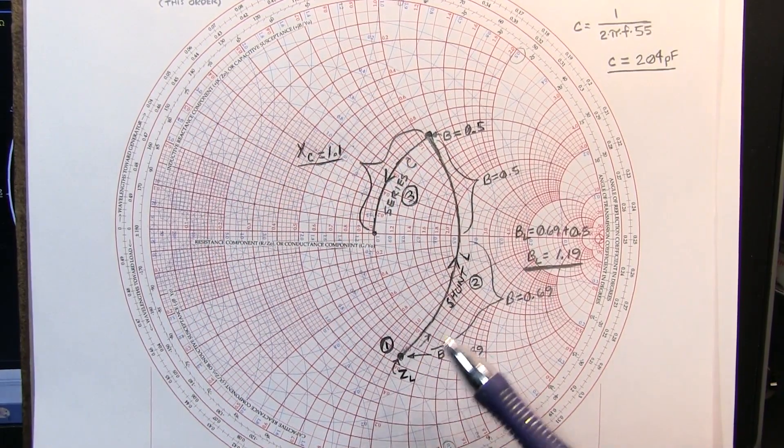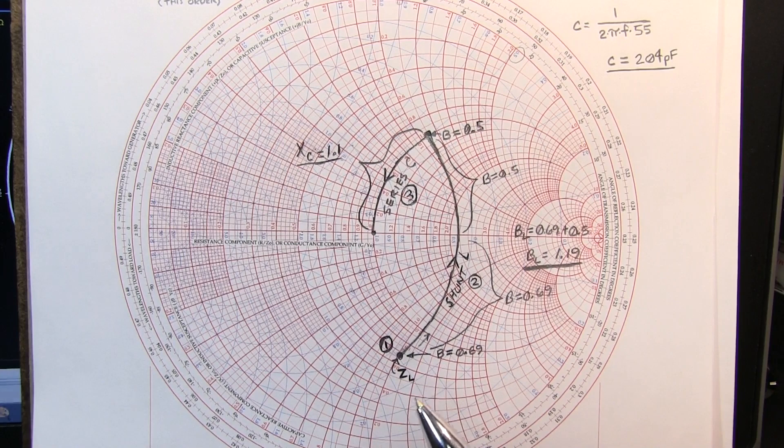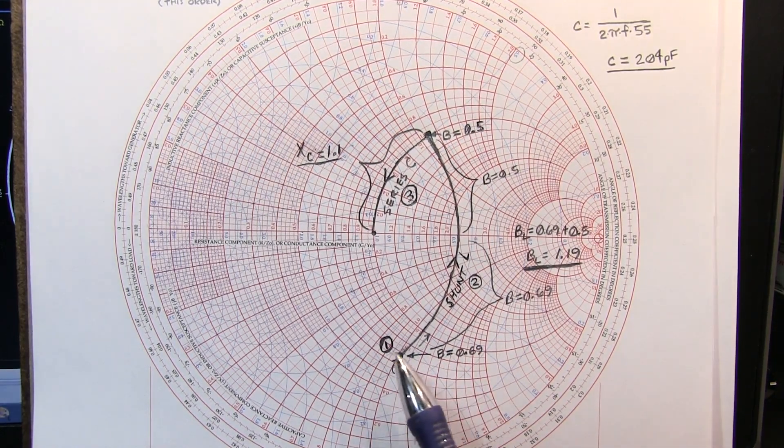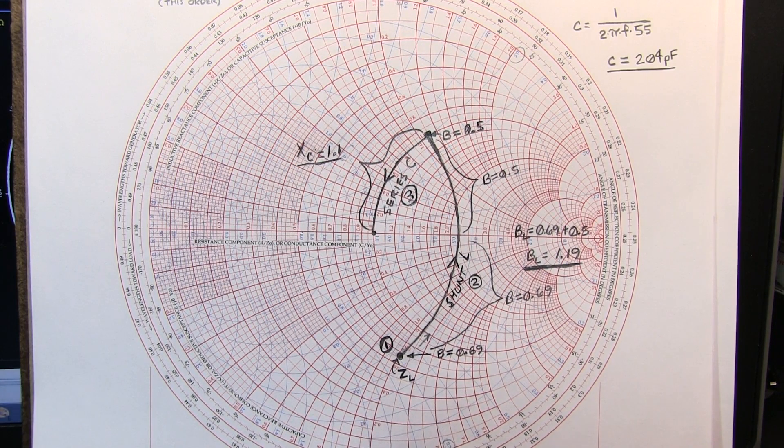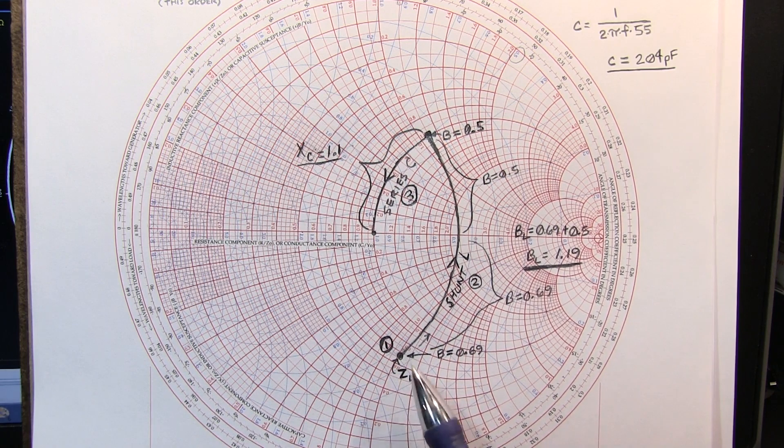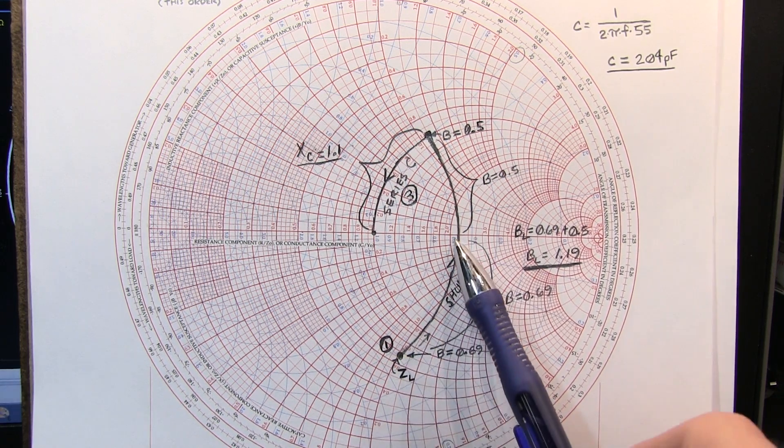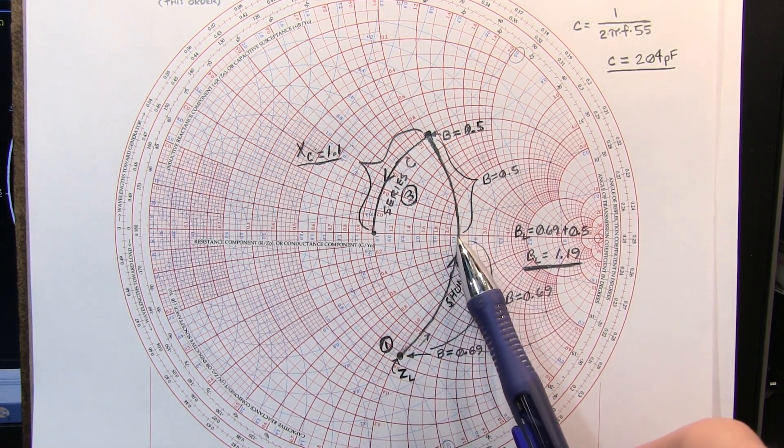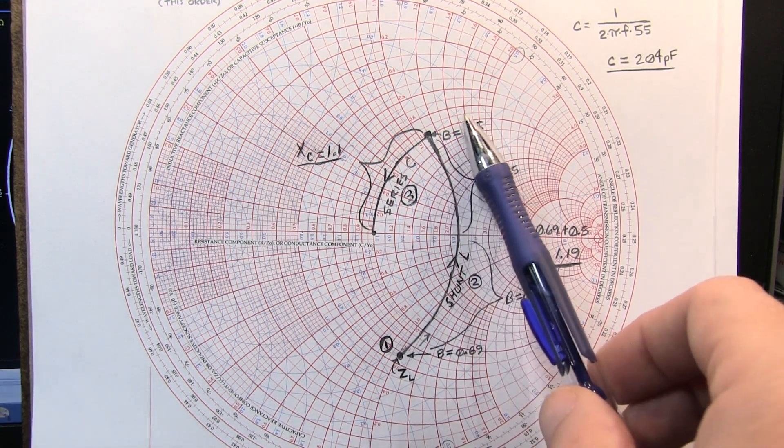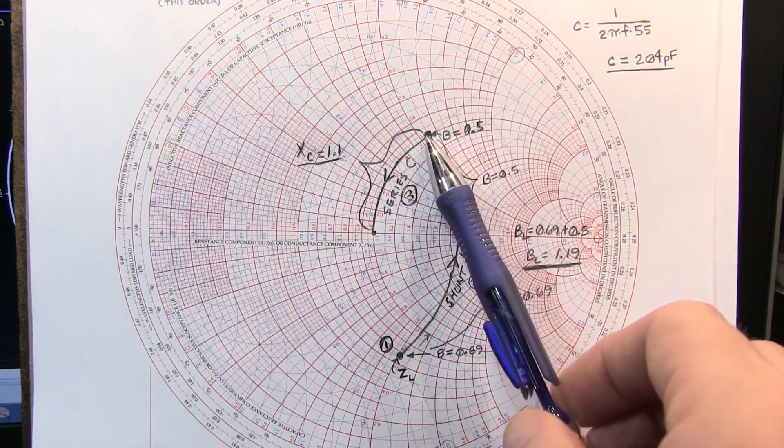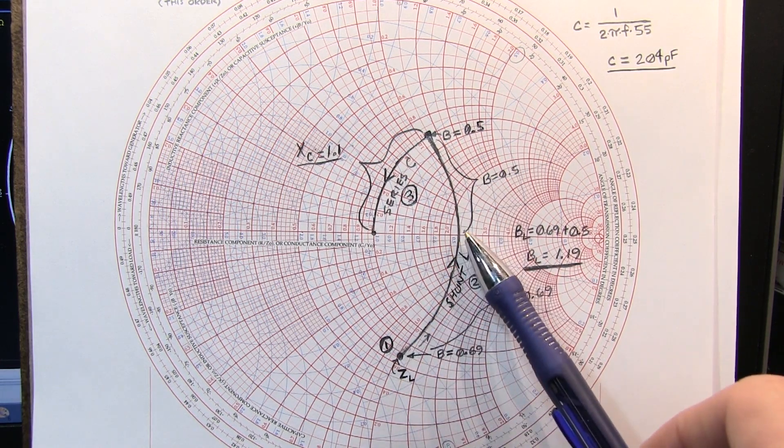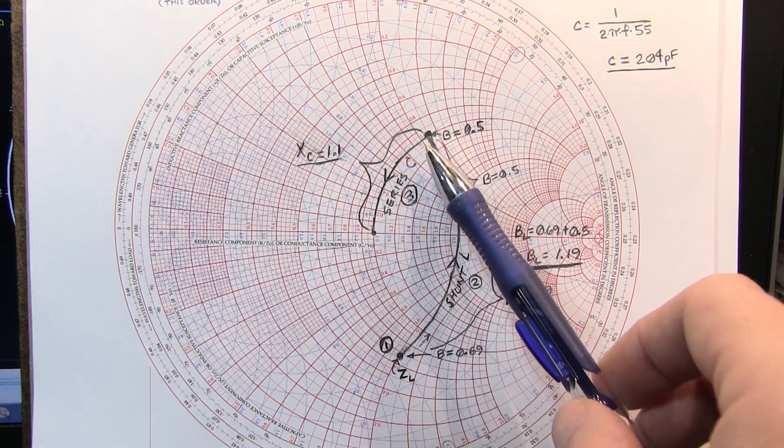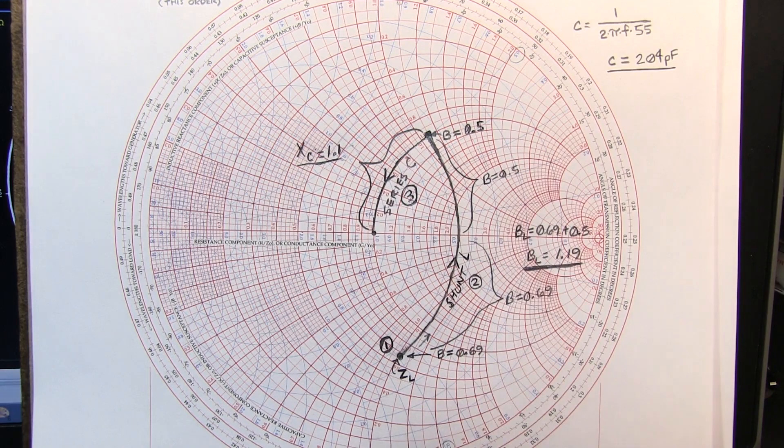So how far did we move? If we look very carefully, we can see that the susceptance at this point is a value of 0.069. It's right adjacent to this 0.7 susceptance line. So we're going to move 0.69 to here, and then if we look again carefully up to this end, we're on the 0.5 susceptance line. So the total distance that we've moved is 0.69 plus 0.5 or 1.19.